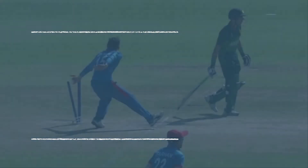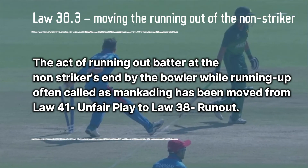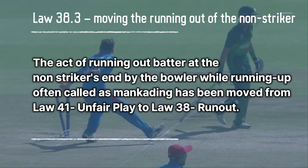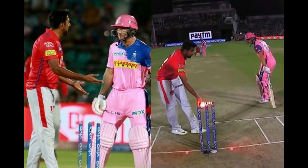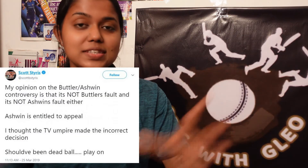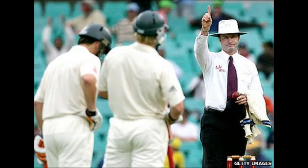Law 38.3: Running Out the Non-Striker. The act of running out the batter at the non-striker's end by the bowler while running up — often called Mankading — has been moved from Law 41 (Unfair Play) to Law 38 (Run-Out). Who can forget the incident in the 2019 IPL involving Ashwin, Mankad, and Jos Buttler? There was huge controversy, with some calling the act not in the spirit of the game. The MCC has now officially called it a run-out, no longer unfair play, and this rule will be added to this year's IPL season.